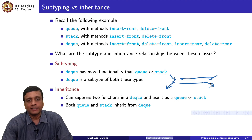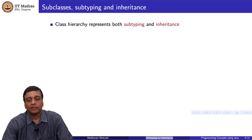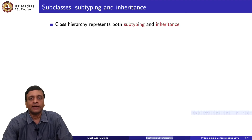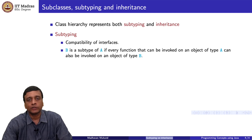So we see that we have two opposite directions with these three data types. In the subtyping sense, deque is a subtype of both stack and queue. But in the inheritance sense, both queue and stack inherit from deque. The confusion arises because the class hierarchy is the only way we have of describing the relationship between classes in a language like Java, and this hierarchy has to simultaneously represent both subtyping and inheritance.